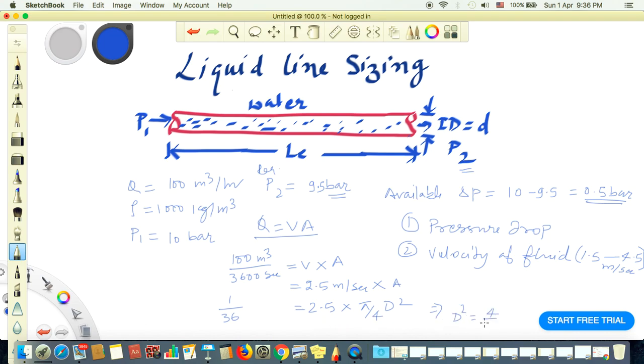A is pi by 4 into D square. So this is 1 over 3600, and we can calculate D square equals 4 over 3600 into 1 over 2.5. We'll get a value, and D will be the square root of 1 by 9 into 10 by 25 into 1 upon pi. This will be our first estimate of the pipe ID.